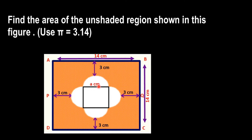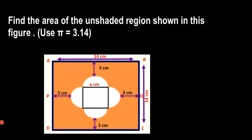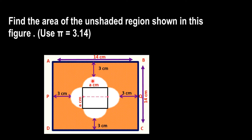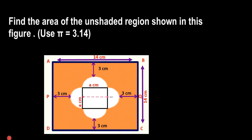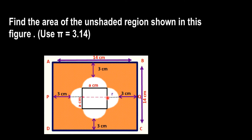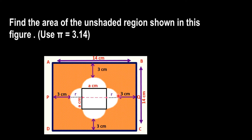We take the side of the square as 'a' centimetres. Note that the side of the square is equal to the diameter of the circle. If we join the line PQ, then PQ contains 3 centimetres plus radius plus the side 'a' centimetres plus radius plus 3 centimetres.